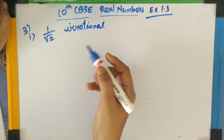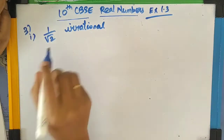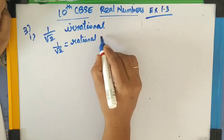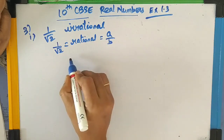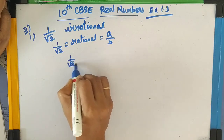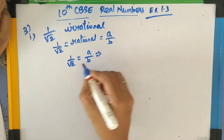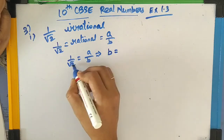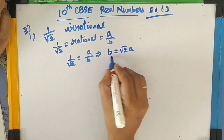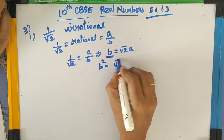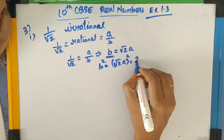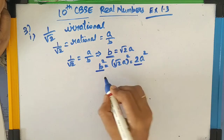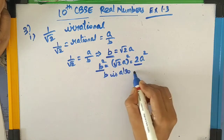Now we can go to the next sum. We have to prove that 1 by square root of 2 is an irrational number. Here too, we have to assume that 1 by square root of 2 is a rational number, equal to A by B. Following the same procedure, 1 by square root of 2 equals A by B, so B equals square root of 2 times A. Therefore B squared equals 2A squared. Here we are applying Theorem 3 — if B squared is divisible by 2, then B is also divisible by 2.